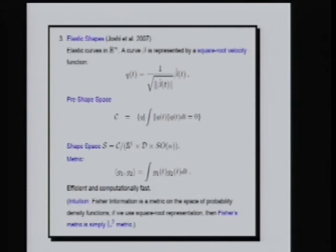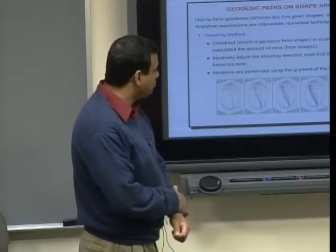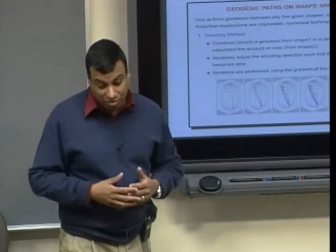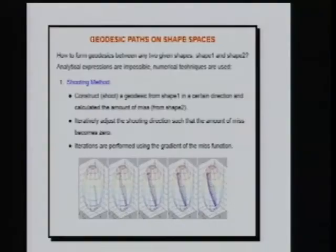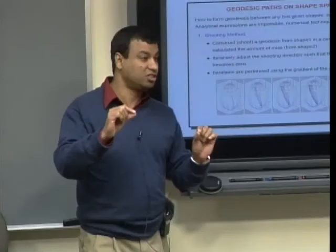Once we have chosen spaces and metrics — and I've given three examples while others like David Mumford and Peter Maker have built almost a library of metrics for the same space — we want to find the shortest path connecting any two shapes on that manifold. Think of a sphere where you have two points and want the shortest path connecting them: technically, a geodesic. These manifolds are infinite-dimensional and nonlinear, so analytical expressions are quickly ruled out and we must use numerical techniques.